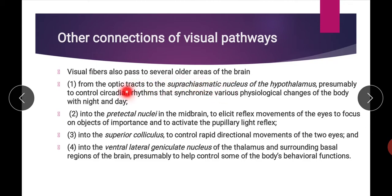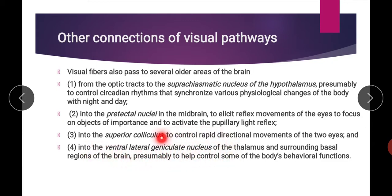To summarize the other connections of the visual pathway: first, to the suprachiasmatic nucleus, which controls diurnal variation or circadian rhythm; second, to the pre-tectal nuclei, which control reflex activity such as the light reflex and accommodation reflex; third, to the superior colliculus, which controls rapid directional movement of the two eyes; and fourth, to the ventral lateral geniculate nucleus and basal region, which provide the connection between the visual pathway and the limbic system, controlling the body's behavioral functions.